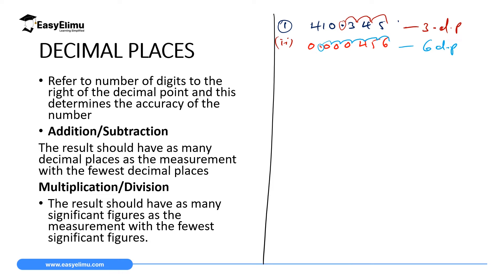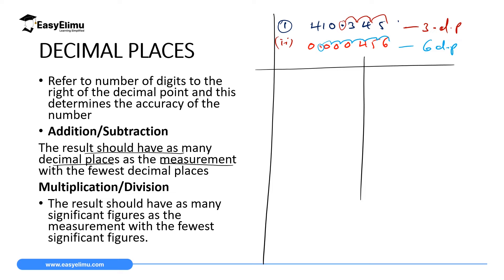We also have different ways to assign decimal places depending on the type of operation. If you are doing an addition or subtraction, you assign the number of decimal places based on the number that has the least decimal places. The result should have as many decimal places as the measurement with the fewest decimal places.